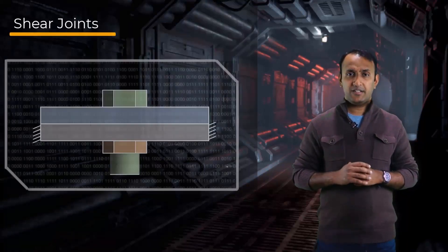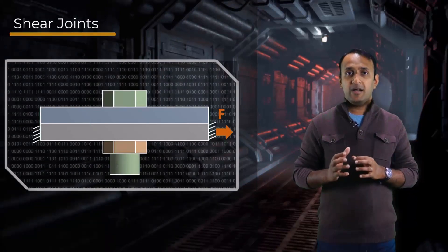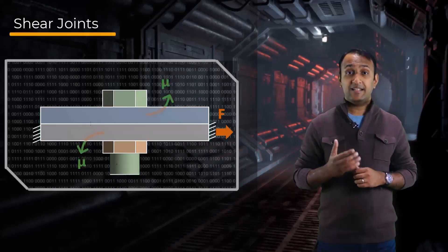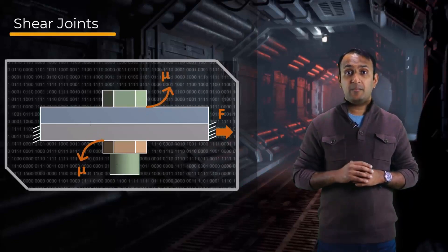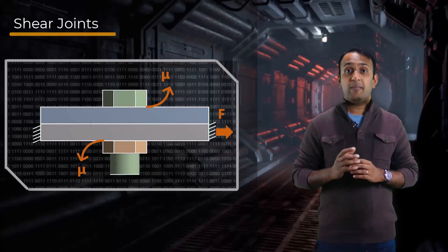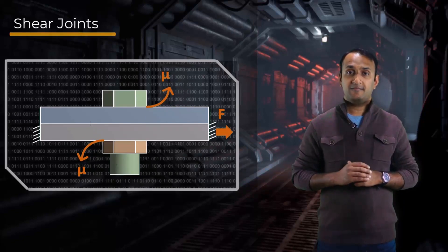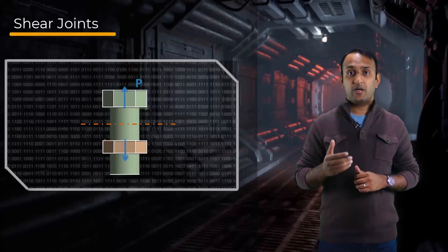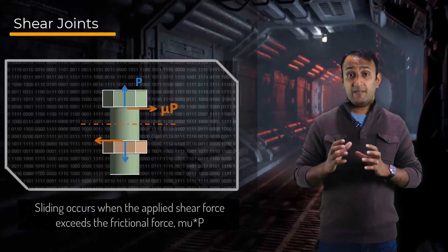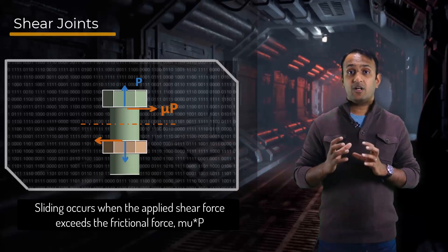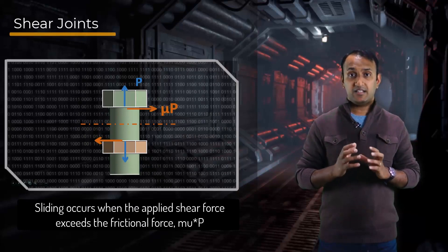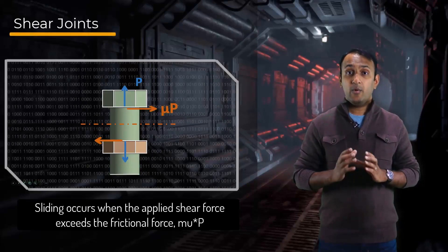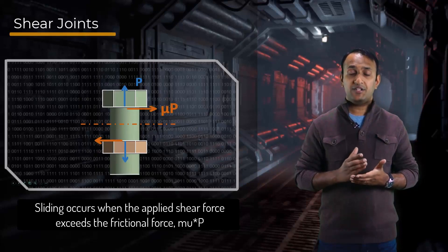In the case of shear joints, the bolted joint predominantly transfers shear forces between the clamped parts. In this case, the friction between the fastener heads and the components plays a crucial role. The friction force is directly proportional to the preload in the bolt, as the preload is responsible for creating the normal contact pressure between the fastener heads and the components. So, bolt preload is a critical design requirement for shear joints.